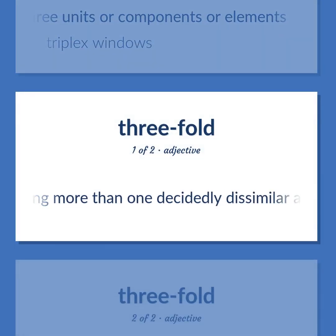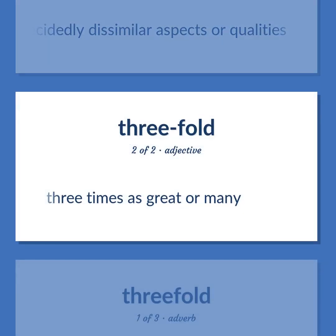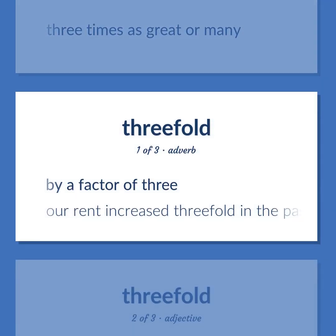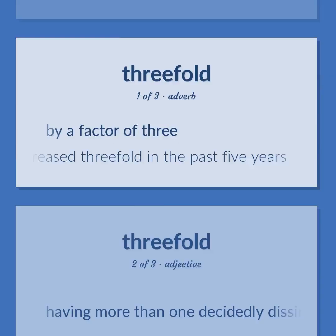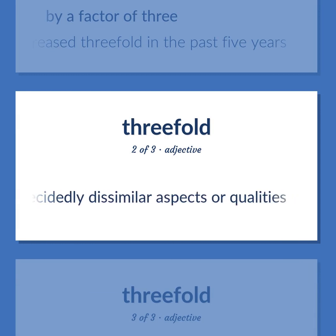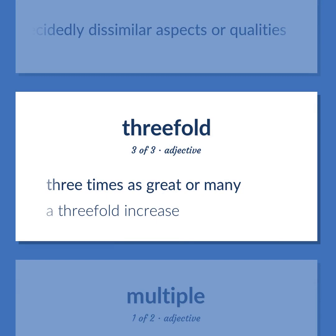Threefold: Having more than one decidedly dissimilar aspects or qualities. Three times as great or many. By a factor of three. Example: Our rent increased threefold in the past five years. Having more than one decidedly dissimilar aspects or qualities. Three times as great or many. Example: A threefold increase.